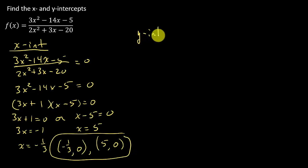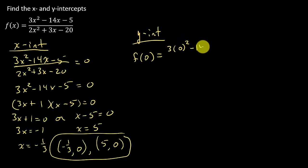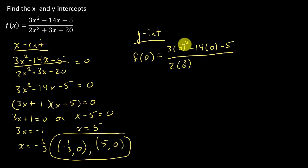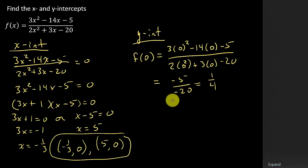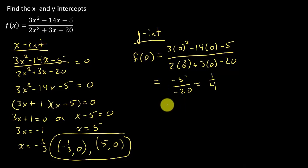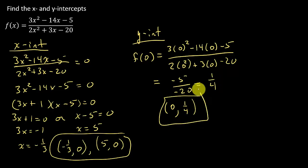Now for the y-intercept, I evaluate the function at zero: (3(0)² − 14(0) − 5)/(2(0)² + 3(0) − 20) = (0 − 0 − 5)/(0 + 0 − 20) = (−5)/(−20) = 1/4. So the y-intercept is the point (0, 1/4).